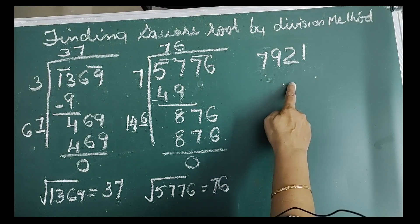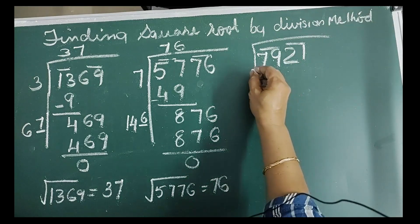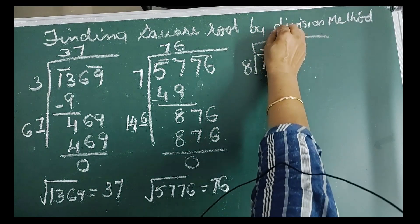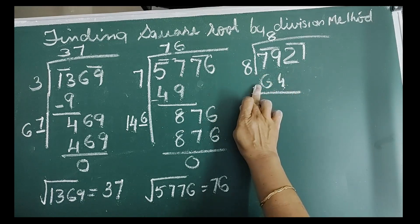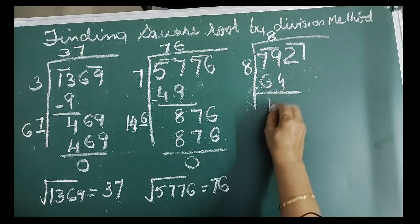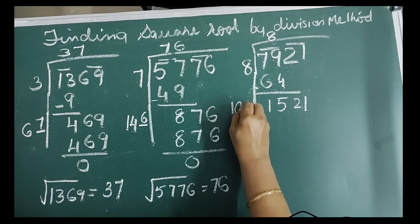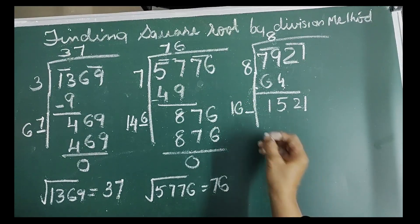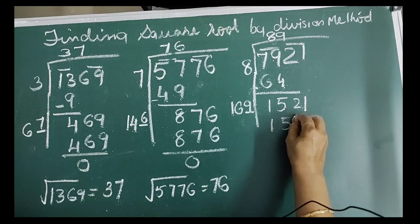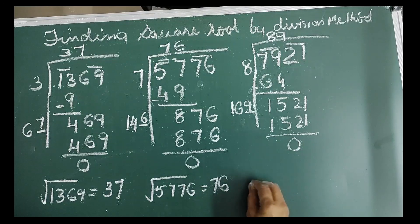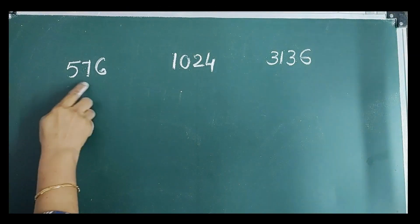Next number is 7,921. Putting bars, divisor and quotient are 8. 8 times 8 is 64, remainder is 15. Bring down the next bar, new dividend is 1521. Double the quotient to get 16 with a blank. Guess digit 9, quotient also 9. 9 multiplied by 169 gives 1521, remainder is 0. Therefore, square root of 7,921 is equal to 89.